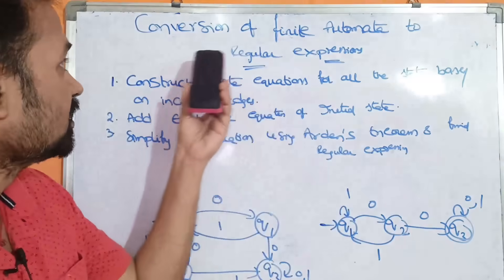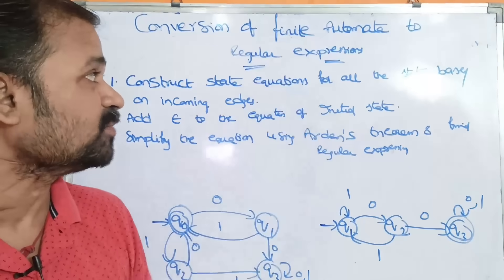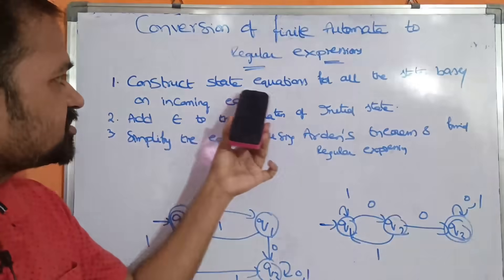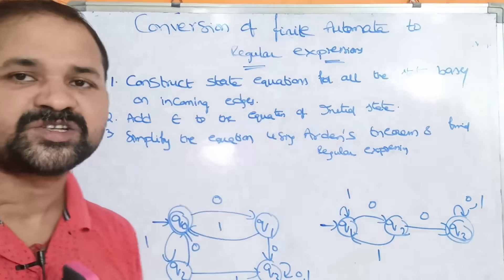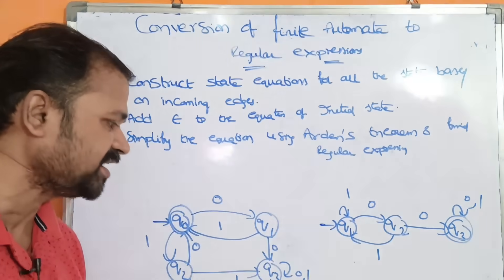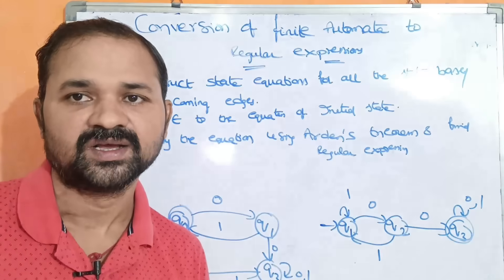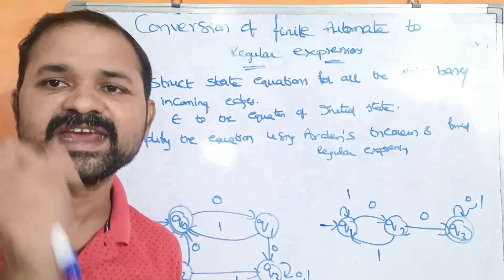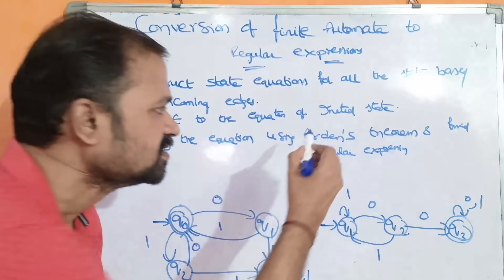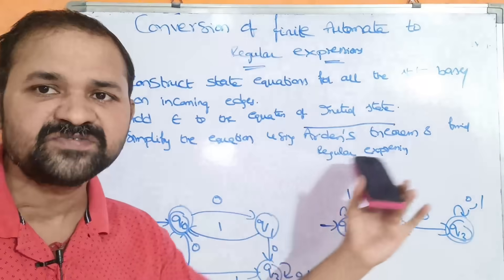Let us discuss conversion of finite automata into regular expression. The input is finite automata and the output is regular expression. There are three steps: first, construct state equations for all states based on incoming edges; second, add epsilon to the equation of the initial state; and third, simplify the equations using Arden's algorithm.